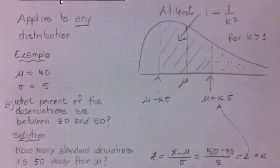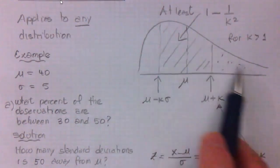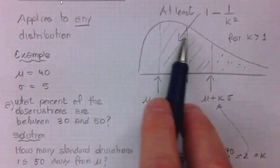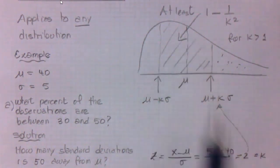Now, remember that we don't know anything about the shape of the distribution, so the only thing we know is that we have at least 75% of the observations in the middle region.